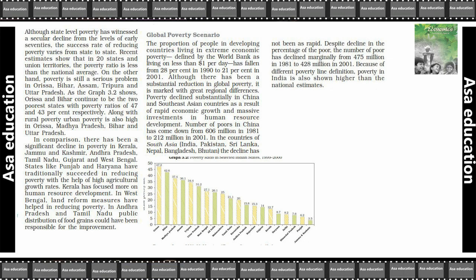In comparison, there has been a significant decline in poverty in Kerala, Jammu and Kashmir, Andhra Pradesh, Tamil Nadu, Gujarat and West Bengal. States like Punjab and Haryana have traditionally succeeded in reducing poverty with the help of high agricultural growth rates.